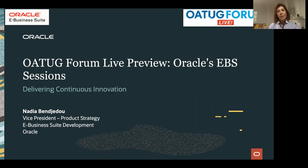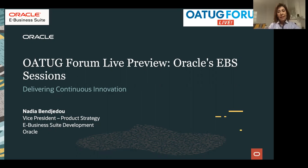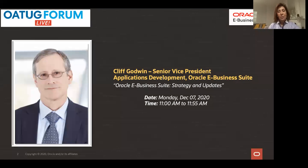Today what I'm going to do is give you a preview of what EBS content is going to be at the conference next week, with some detail of what to expect. First of all, this is very much sponsored and supported by the EBS organization from the very top level by Cliff Godwin, who will be presenting on Monday at 11 o'clock, Monday the 7th of December. He will be talking about the EBS strategy, where we are, where we are going. If you know Cliff, you know how much material and content he will be delivering, as usual in all the conferences.